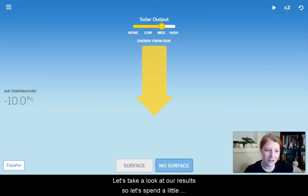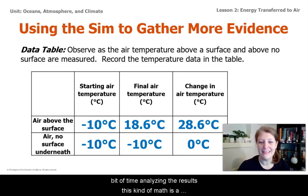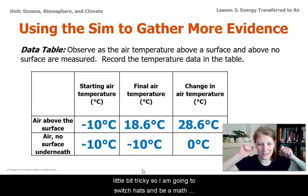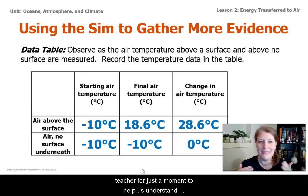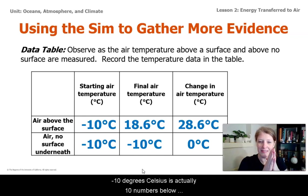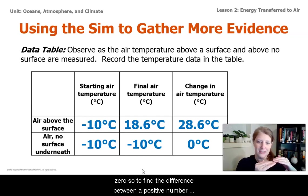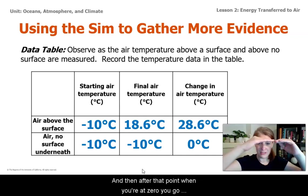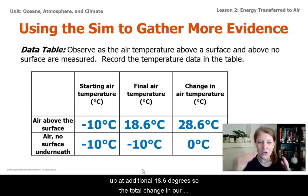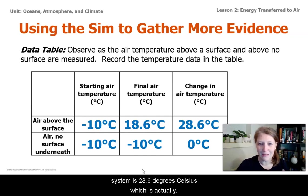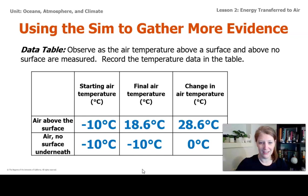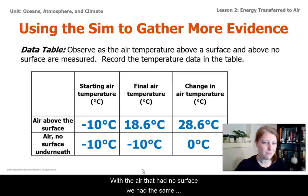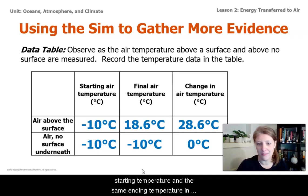Let's spend a little bit of time analyzing our results. This kind of math is a little bit tricky, so I'm going to switch hats and be a math teacher for just a moment to help us understand subtracting negative numbers. Negative 10 degrees Celsius is actually 10 numbers below zero. To find the difference, you have to go up 10 degrees just to get to zero, and then an additional 18.6 degrees after that. So the total change in our system is 28.6 degrees Celsius, which is actually quite a lot. With the air that had no surface, we had the same starting and ending temperature — a change of just zero degrees Celsius.